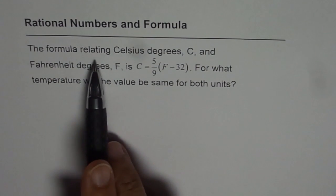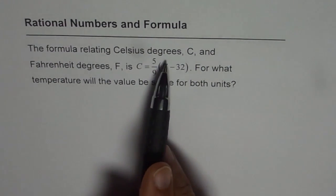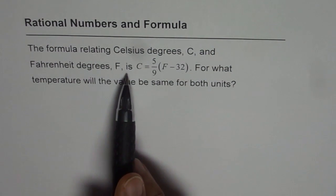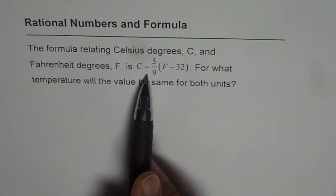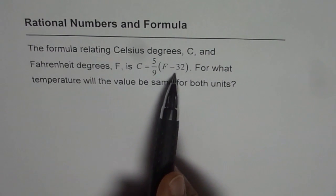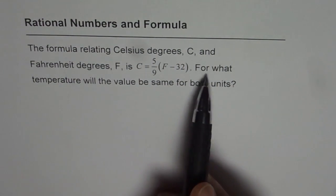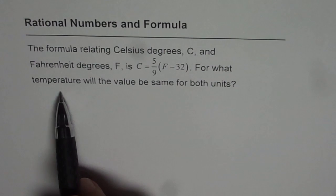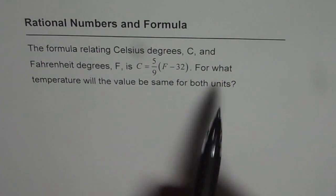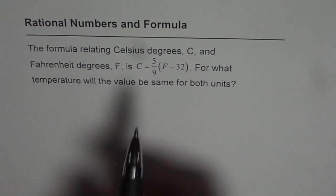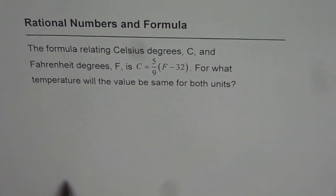The formula relating Celsius degrees C and Fahrenheit degrees F is C equals 5 over 9 times (F minus 32). For what temperature will the value be the same for both units? That is to say, C equals F.